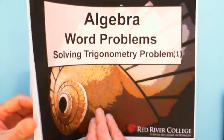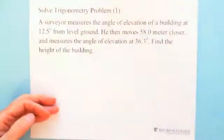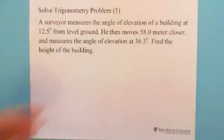Let's try one question. A surveyor measures the angle of elevation of a building at 12.5 degrees from level ground.